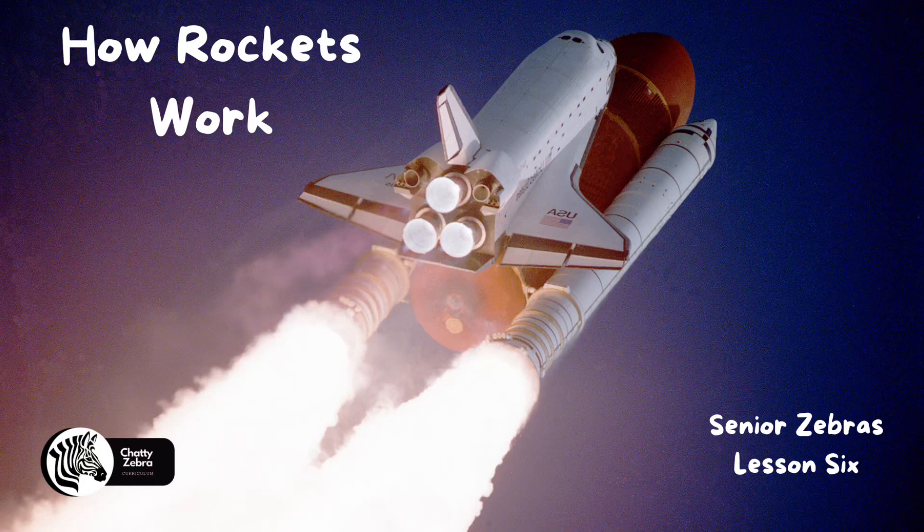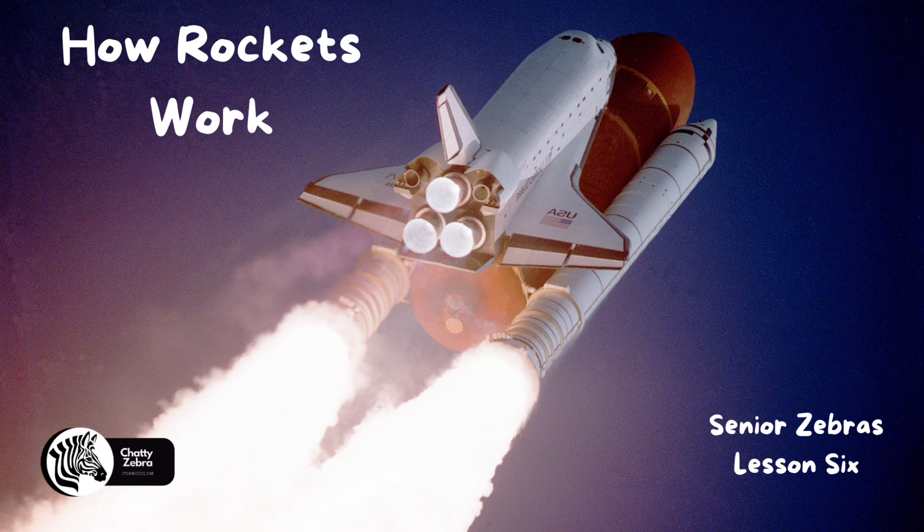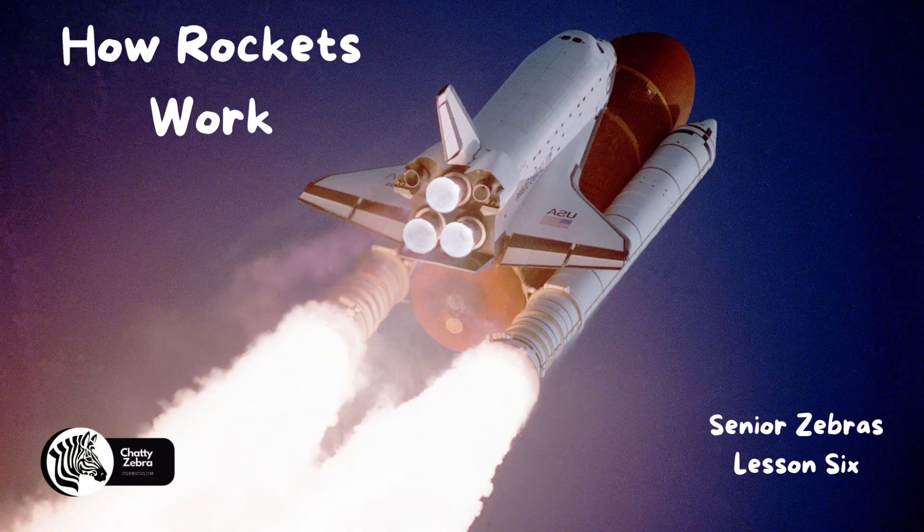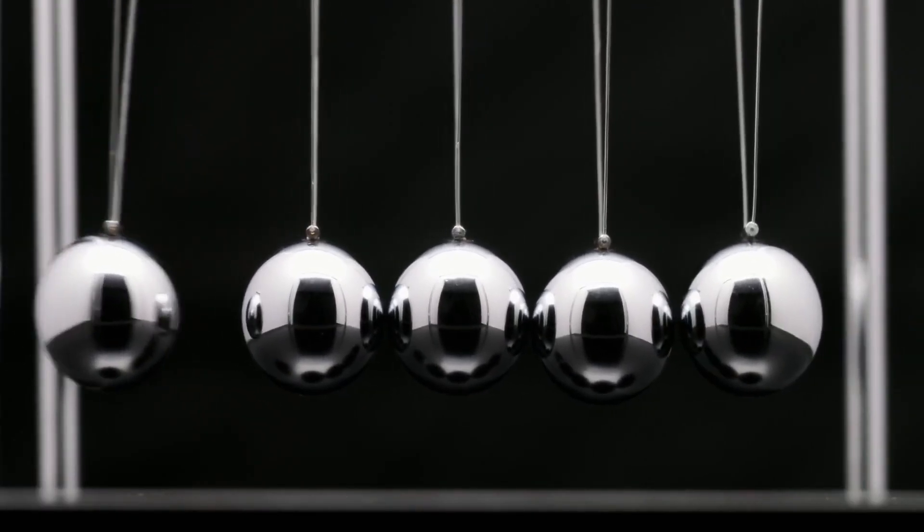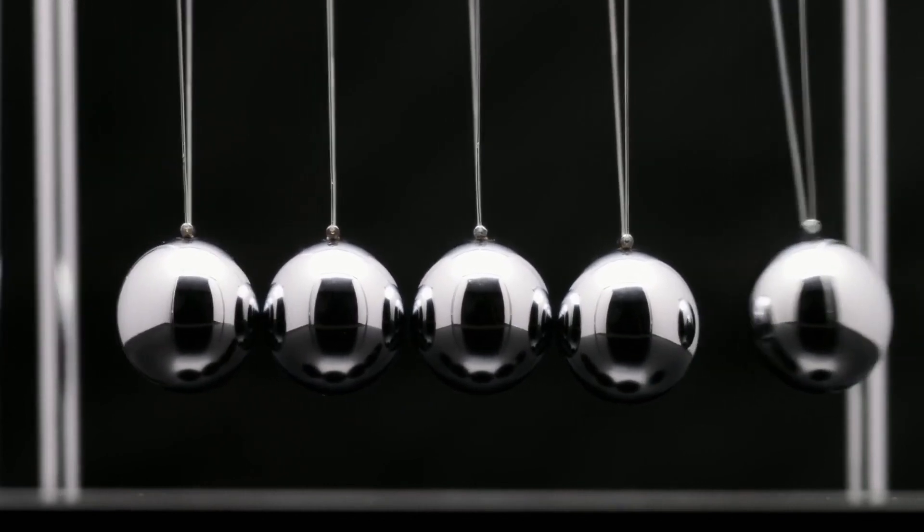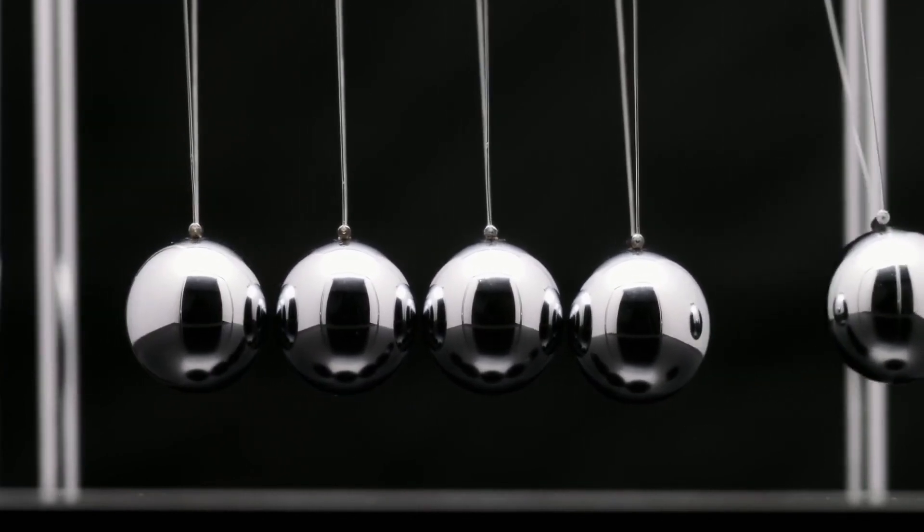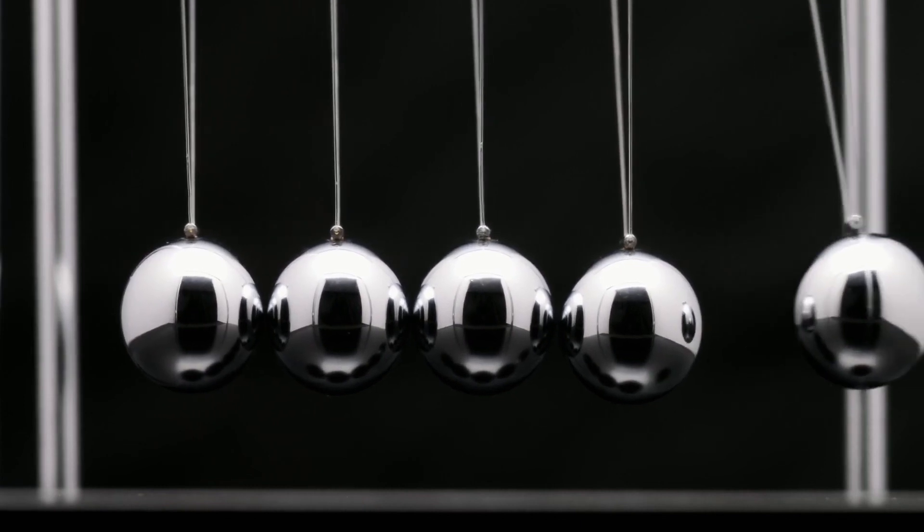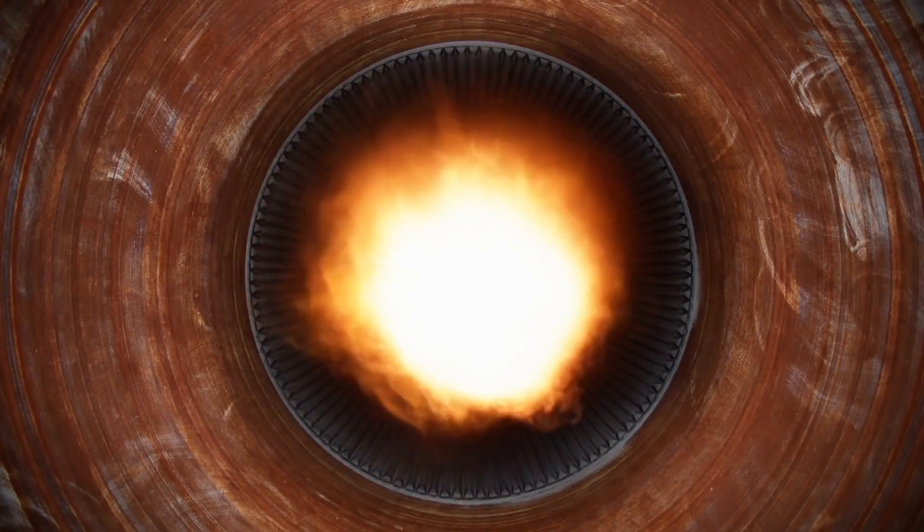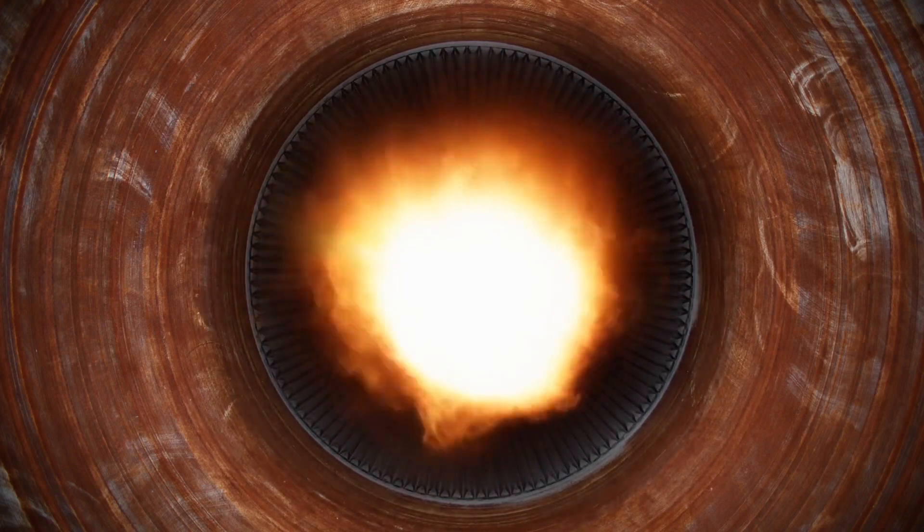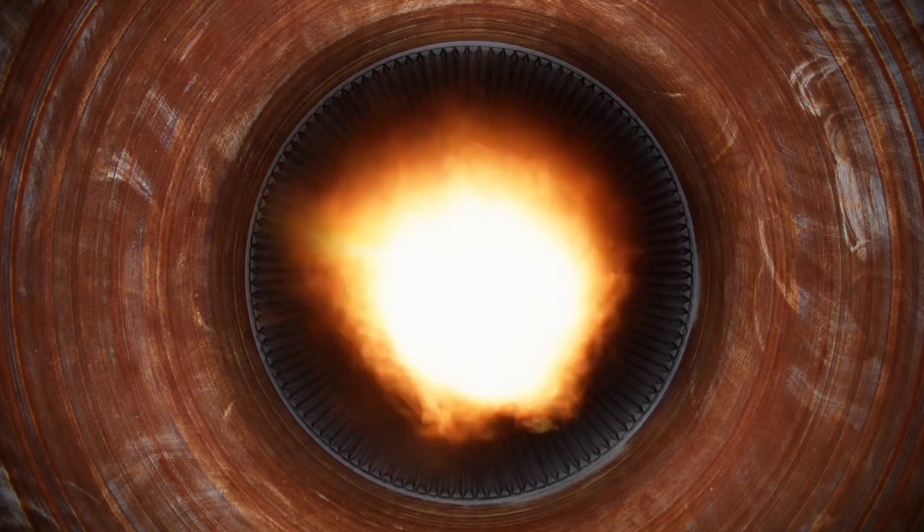Lesson 6: How Rockets Work. Space rockets work on the principle of Newton's Third Law of Motion, which states that for every action, there is an equal and opposite reaction. Rockets use this principle to generate thrust and propel themselves into space. Here's an explanation of how space rockets work.